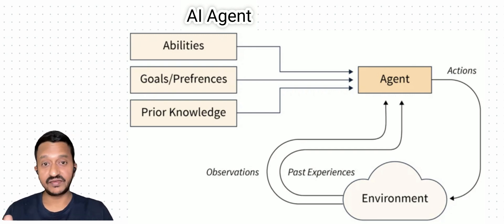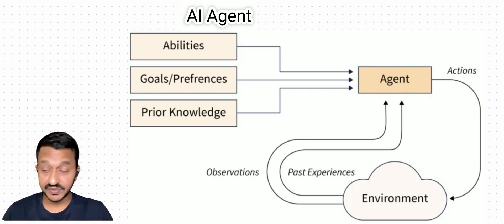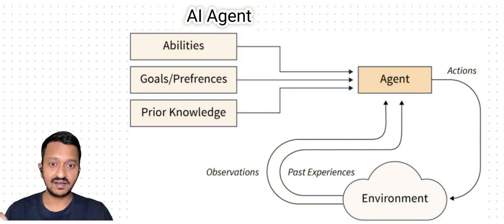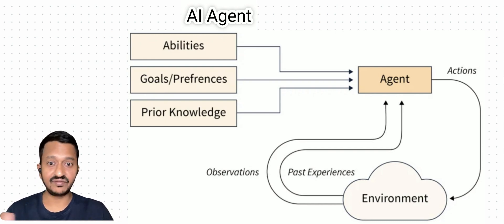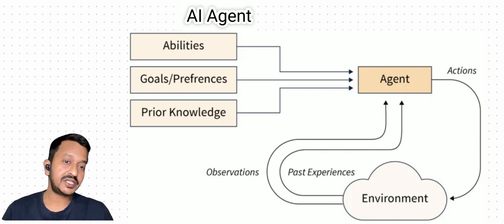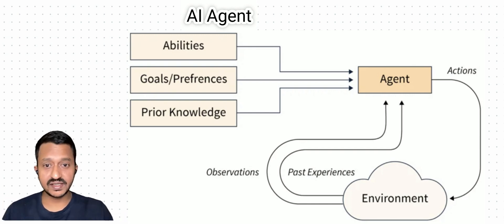That is where the concept of AI agents comes in, wherein these AI agents have components like perception, brain, and action. All three things come together to solve any complex tasks you give to the system. AI agents are specialized computer systems or software that can analyze the environment, take decisions on their own, subdivide complex tasks into sub-tasks, and assign each task to agents that are specialized in it — all autonomously.